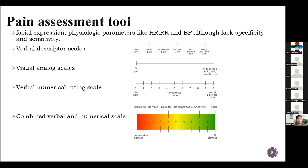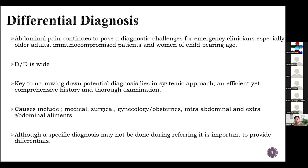Differential diagnosis is always important and one of the challenges in emergency, especially in older adults, immunocompromised patients, and women of childbearing age. The differential is wide. The key to narrowing down potential diagnoses lies in a systematic approach — a comprehensive history and thorough examination may give us a clue. Causes include medical, surgical, gynecological and obstetric, intra-abdominal, and extra-abdominal.